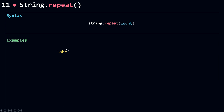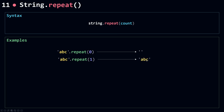I have here a string ABC. If I call repeat and pass in zero as the count, this will return an empty string. If I call abc.repeat with count equal to one, this will return abc repeated one time. If I call abc.repeat with two, this will return a string with two copies of the original string. By the way, repeat doesn't change the original string — it returns a new string.